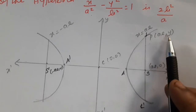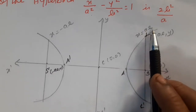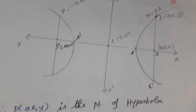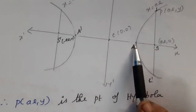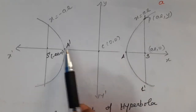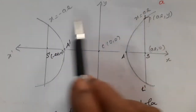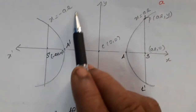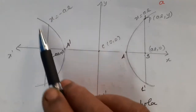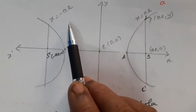Let P be the point (ae, y). A and A dash are vertices, S and S dash are foci. The equations x = ±ae are the equations of the latus rectum, and x = ±a/e are the equations of the directrix.